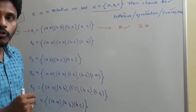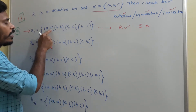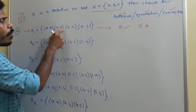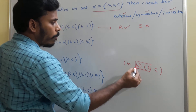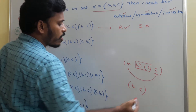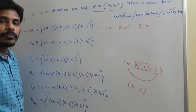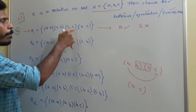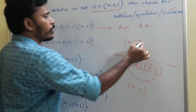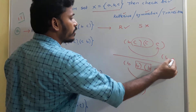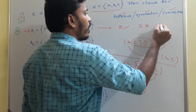Then for transitive: consider pairs where the second element of the first pair equals the first element of the second pair. For (a,a) and (a,a) — no issue. For (b,b) and (b,c): b is common, transferring gives (b,c), which is in the relation. For (b,c) and (c,c): c is common, transferring gives (b,c), which is still in the relation. There are no other pairs where transitivity fails, so this first relation is transitive.